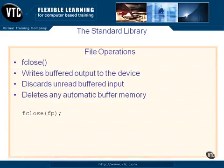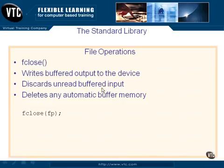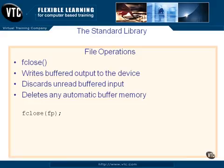F-Close closes a file. If there was any buffered output waiting to go to the device, the F-Flush will be done for you just before the F-Close. The difference is any unread buffered input will be thrown away. So if you have read some strings in and haven't done anything with them and you close that input, that data is lost because the buffer is thrown away. Any automatic buffered memory that was set up by the functions we'll see will be deleted as well. So F-Close does a lot of cleanup for you.